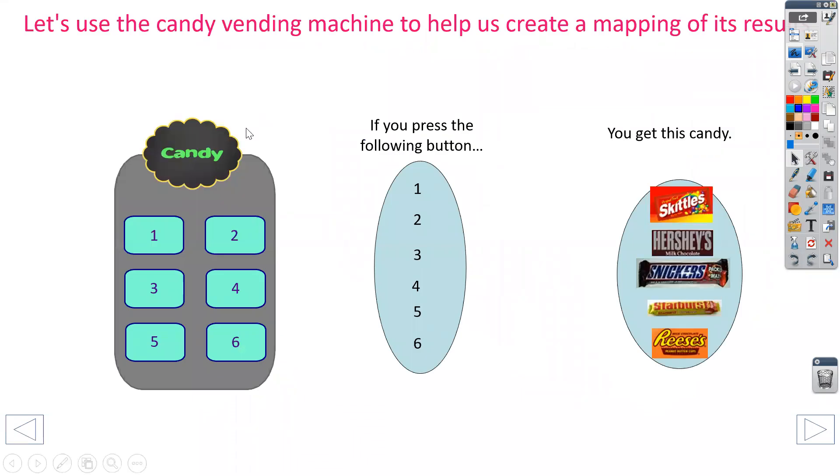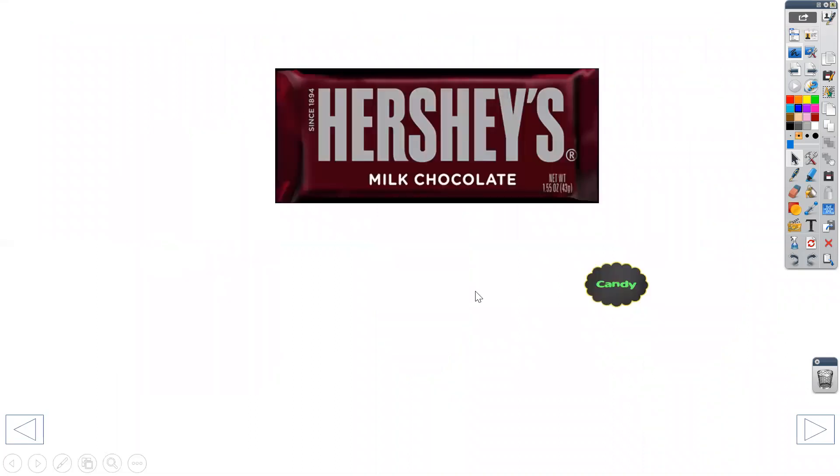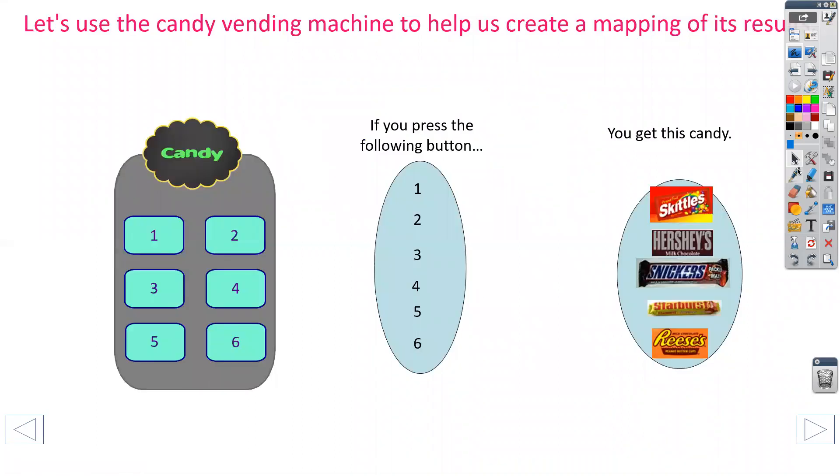So let's pretend this shape over here on the left is a vending machine. And let's create a map of the candy. So if I press number one, we're going to draw an arrow from the number one to which candy it represented. So if I press one, it was a Hershey bar. So I'm going to draw an arrow from number one to the Hershey bar.